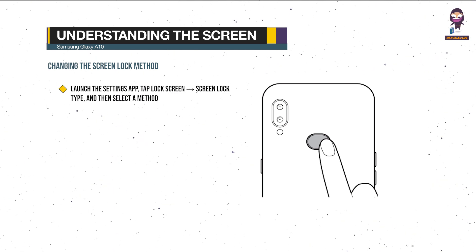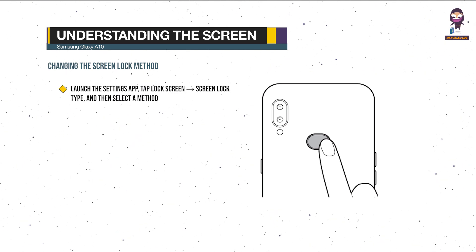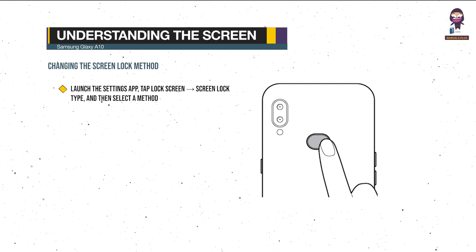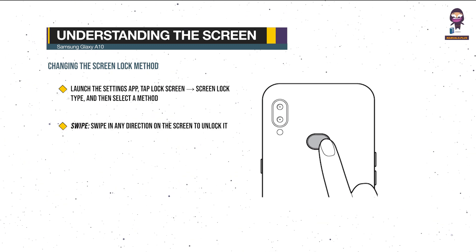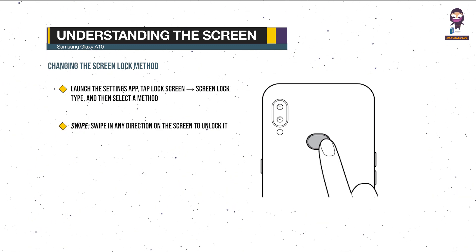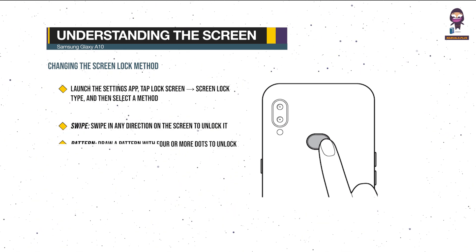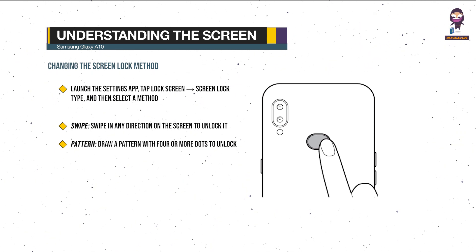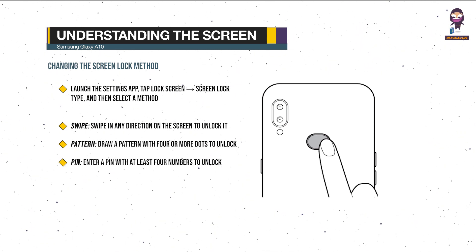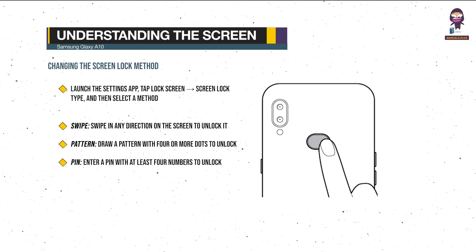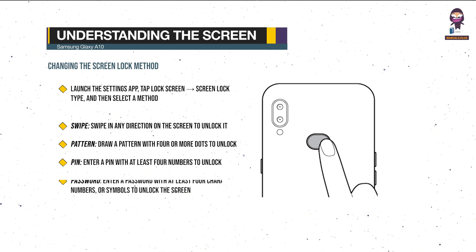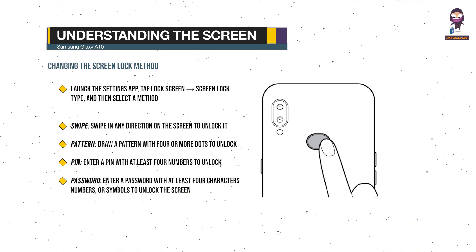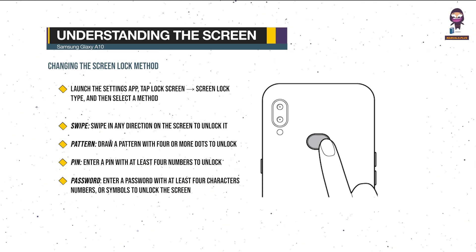To change the Screen Lock Method, launch the Settings app, tap Lock Screen, Screen Lock Type, and then select a method. Swipe: swipe in any direction on the screen to unlock it. Pattern: draw a pattern with four or more dots to unlock the screen. PIN: enter a PIN with at least four numbers to unlock the screen. Password: enter a password with at least four characters, numbers, or symbols to unlock the screen.